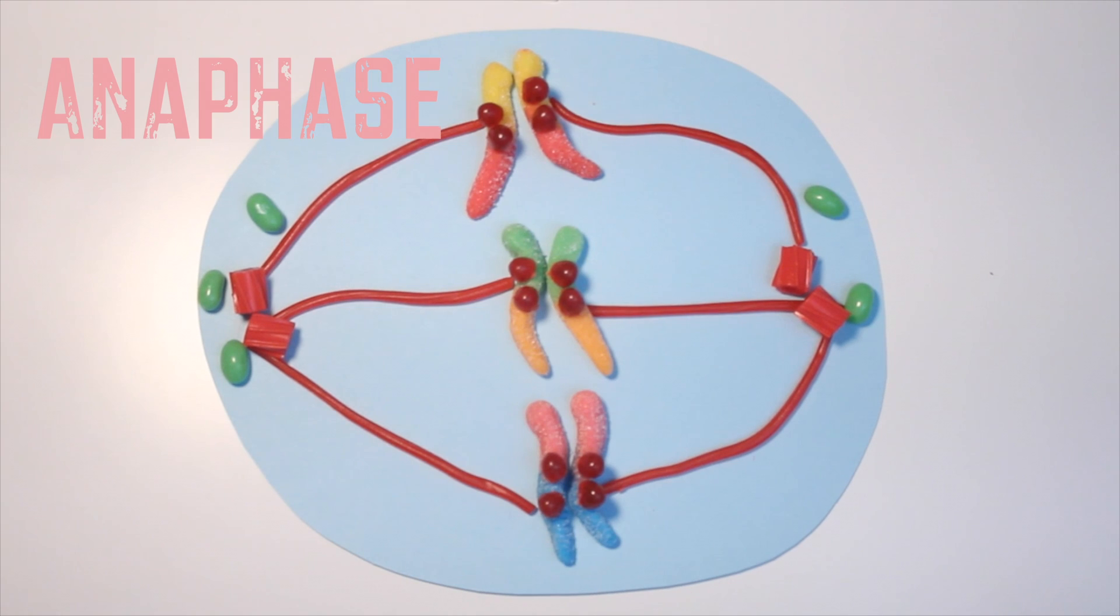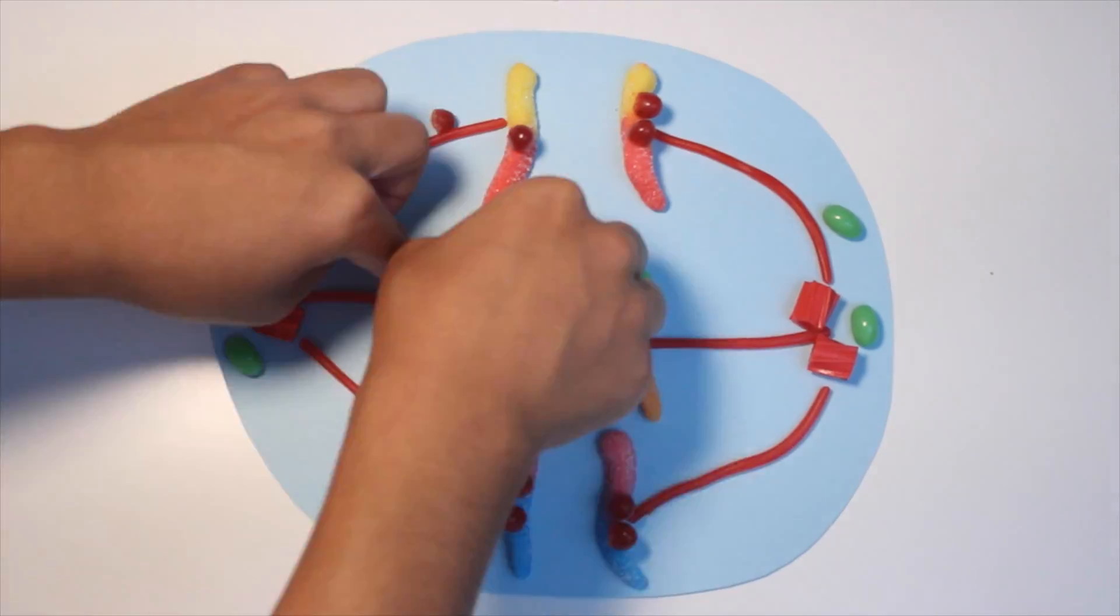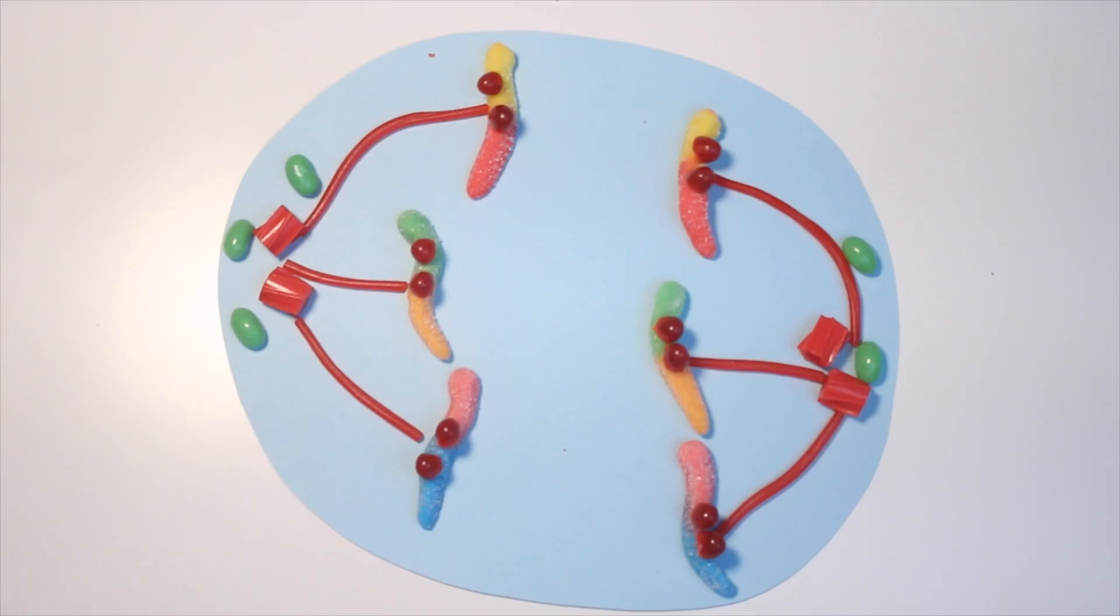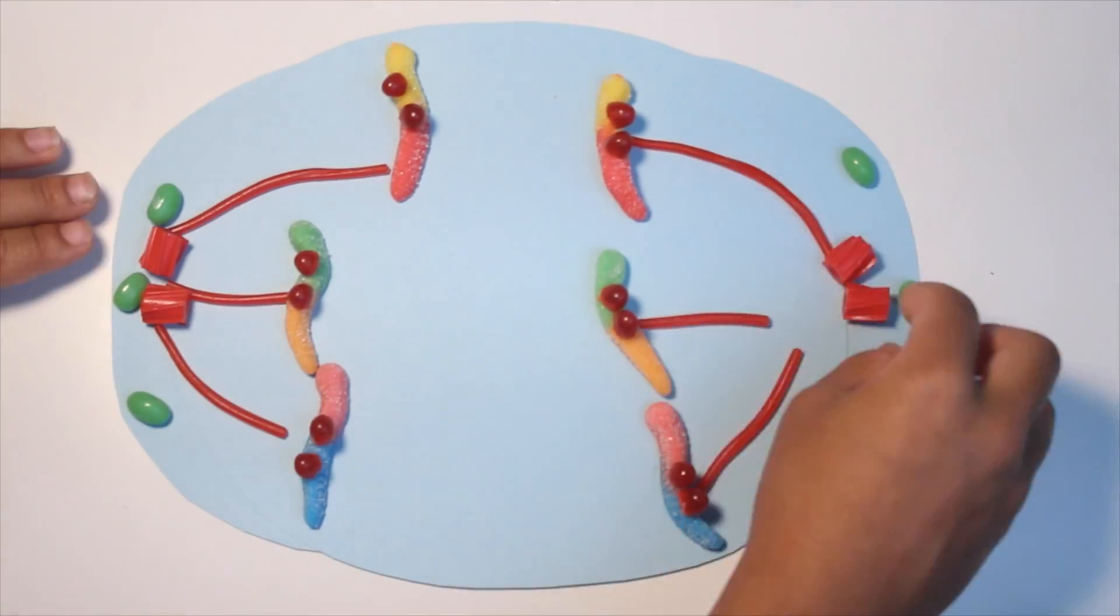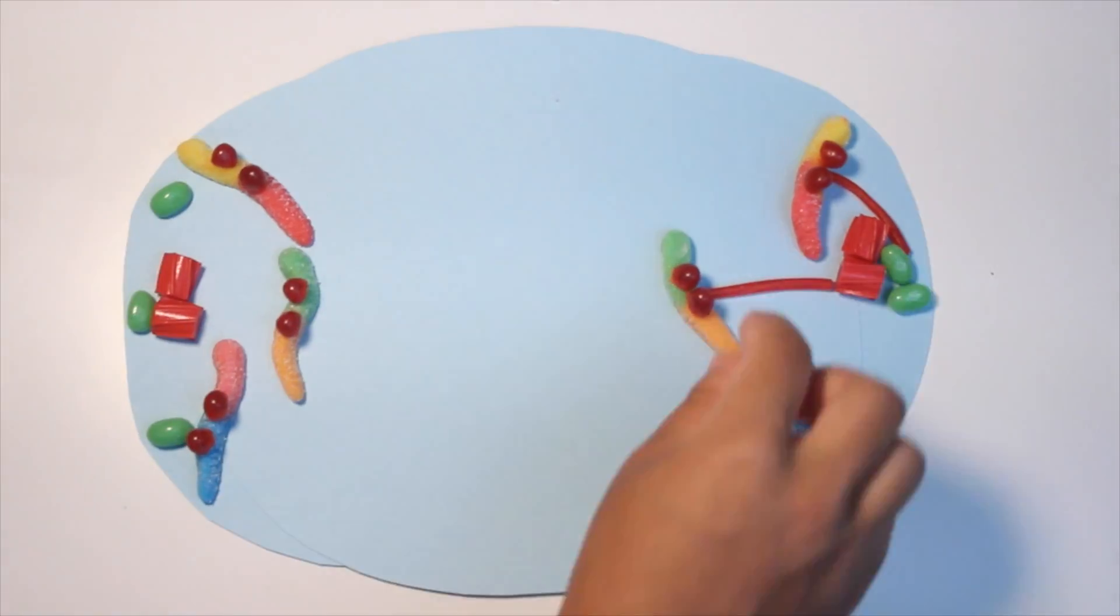The next phase is called anaphase, and it's appropriately named because ana in Greek means back. So what happens during this phase is motor proteins pull harder than ever before and separate the chromatids from their clone. And what this does is it pulls them to the opposite ends of the cell.